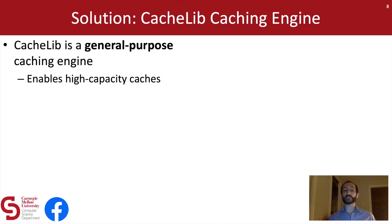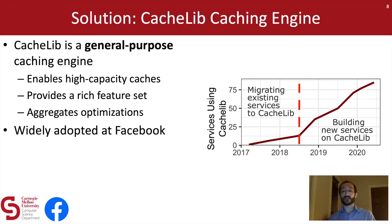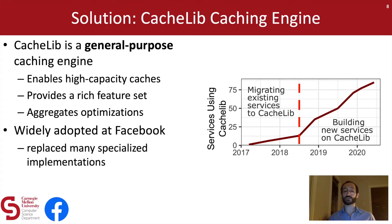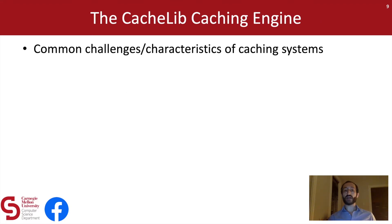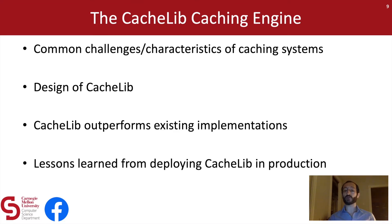Facebook's solution to this problem is the CacheLib caching engine. CacheLib is a general purpose caching engine which enables programmers to build high-capacity caches and provides a rich feature set of caching features. CacheLib also aggregates optimizations from across engineering teams, making it easier to see the uptake of new ideas for caching. CacheLib has been widely adopted at Facebook — it was first deployed in 2017, and after migrating existing services, we've seen explosive growth in the number of use cases since mid-2018. Most importantly, CacheLib has replaced many of the specialized implementations I mentioned earlier.